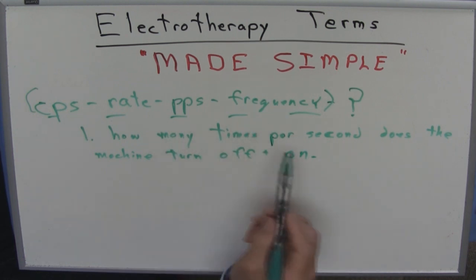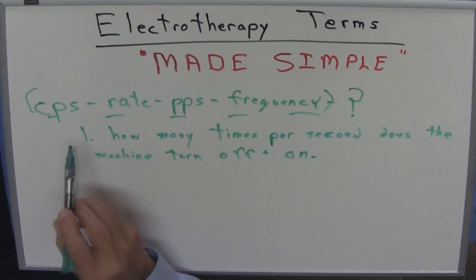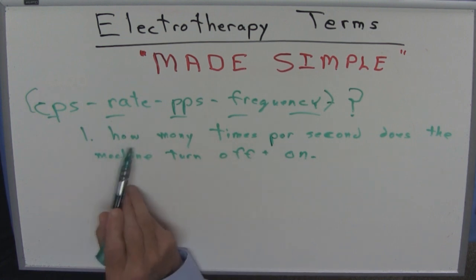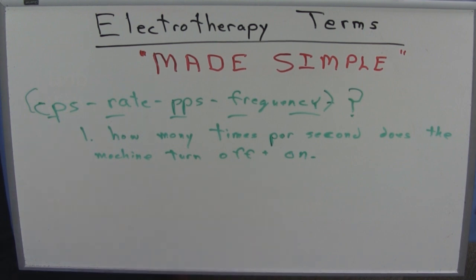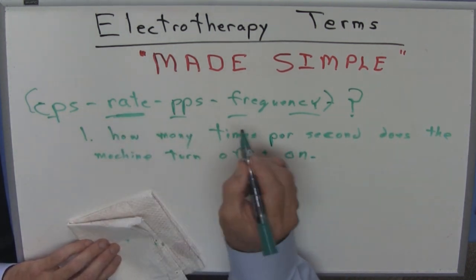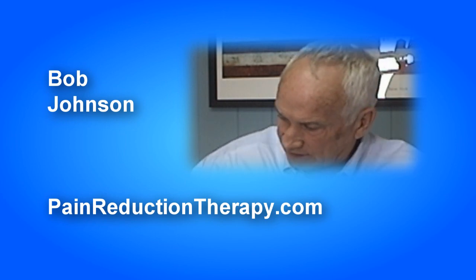Those terms will be used to tell you something, but they're used in such a way that it's hard for you to evaluate. All you're interested in, when somebody tries to throw numbers at you or try to tell you something, just ask them, how many times per second does the machine turn off and on? That's one. That's electrotherapy. We call it generally rate, pulses per second. That's one basic element of electrotherapy.